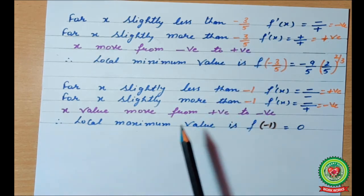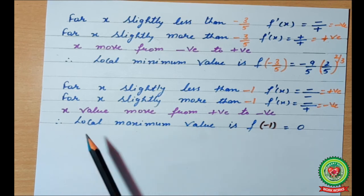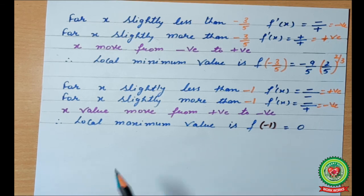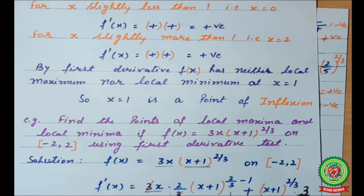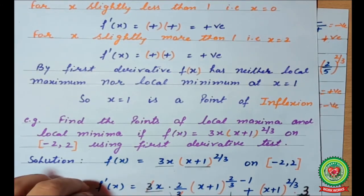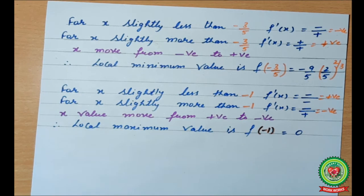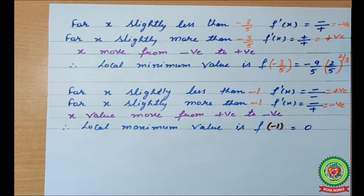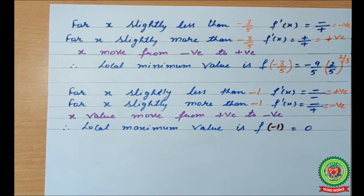So we have local minimum at x = -3/5 and local maximum at x = -1. The local maximum value is found by putting x = -1 into f(x), which gives 0. Now I hope this concept is clear to you. You will receive one link related to this topic — go through that link and do more and more practice. Thank you, bye.